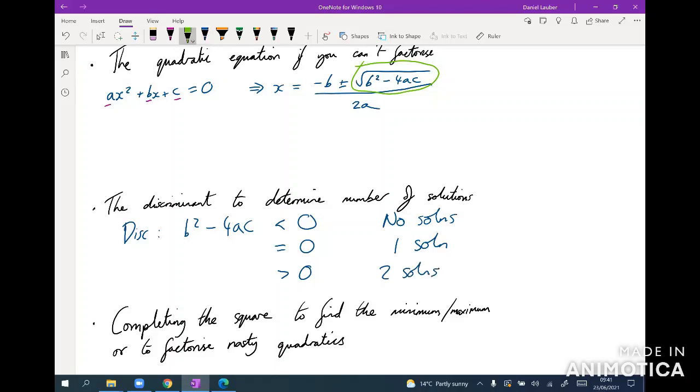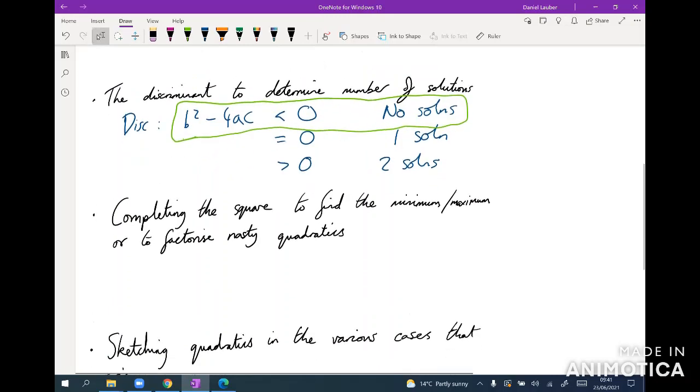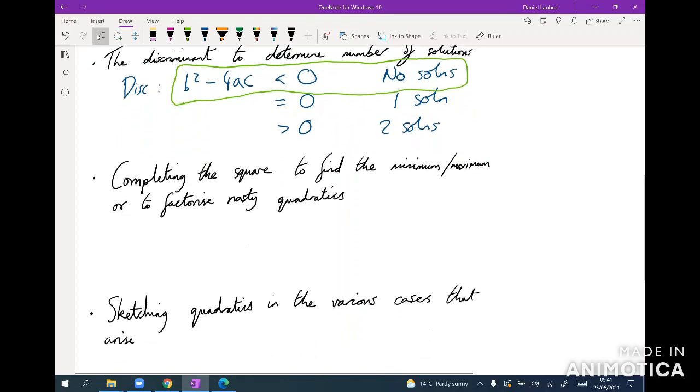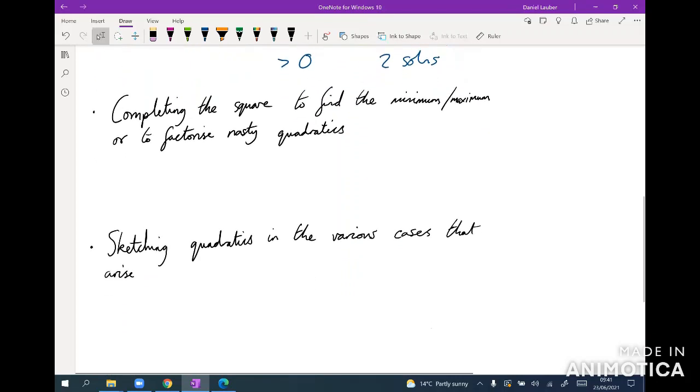And in this situation, you won't be able to factorize the quadratic because the factorized form is the other solution. So obviously if there are no solutions it can't be factorized. One other important method to know is completing the square. That's useful for finding the minimum or maximum of the quadratic, or it can actually be helpful to factorize nasty quadratics, and it's just good to have a few different tools at your disposal.